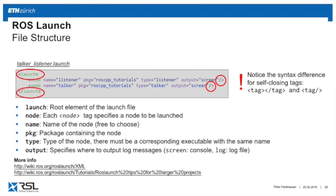Importantly, when writing your own launch file, note the difference between a closing XML tag like </launch> and a self-closing tag like a node tag that ends with a slash. They mean the same thing, but one is self-closing and the other can contain child elements. Whenever you see an XML error, make sure you have these tags correct.